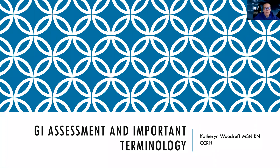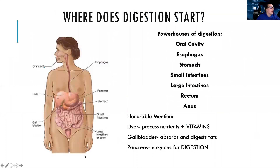Tonight we're going to talk about the GI assessment and some important terminology. When we assess the GI system, we also have to consider the other aspects of the GI system, which includes your general nutritional status. There are many powerhouses of your digestive system — it's a lot of tubes to get to different places, but effectively it all starts with your mouth, or your oral cavity.